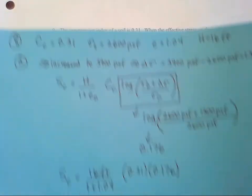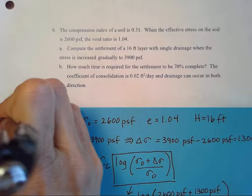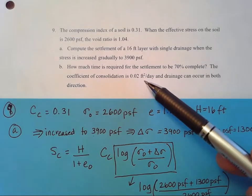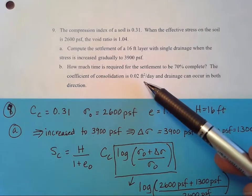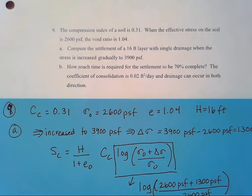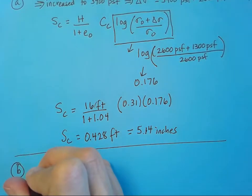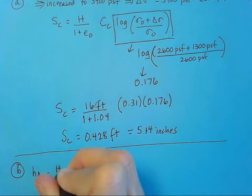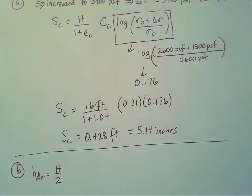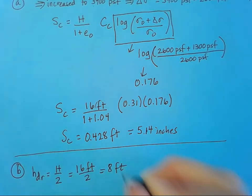Let's take a look at part B. For the settlement to be 70% complete, the coefficient of consolidation is 0.02 feet squared per day. So there's that C sub V and the drainage can occur in both directions. So we've got double drainage going on here. So as soon as I see that double drainage, that's the first thing I'm going to write down. I know that HDR is going to be H over two because it can drain either direction. So it's only half of that. And so in this case, it's 16 feet divided by two and that's eight feet.